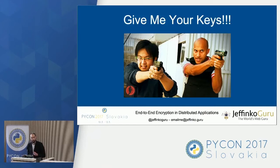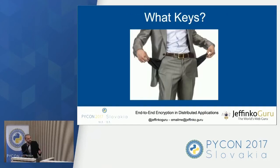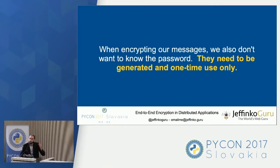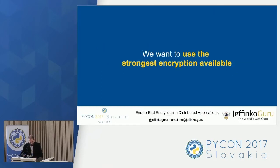That way, when someone asks you to give them your keys, you can simply say: what keys? I don't have the keys. When encrypting our messages it is also helpful if we don't even know our own password. The problem I see a lot in code is that the password is embedded into the code itself, or is generated in a way that can be found out. So what we want to do is generate a one-time use password, encrypt the message, and send it on. We also want to use the strongest encryption available.